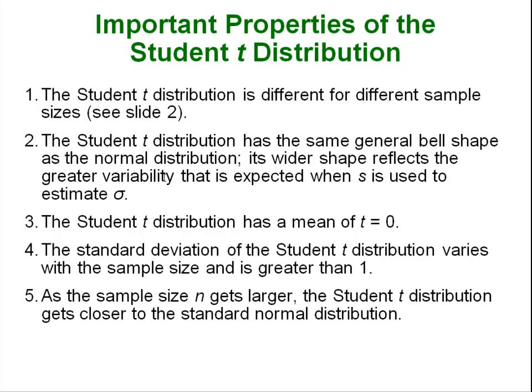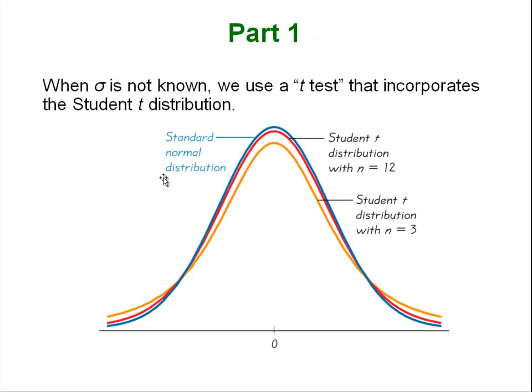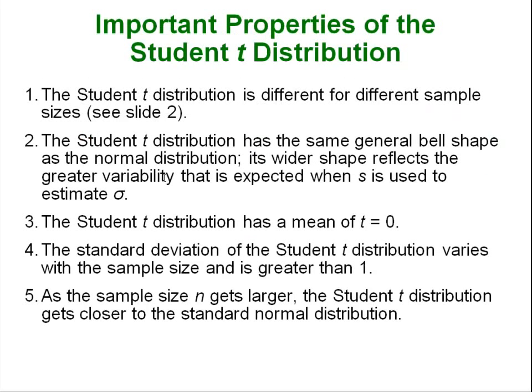Just to remind us some of the important properties of the t distribution: its shape changes every time the sample size goes up as we saw in this slide. Additionally the t distribution is very similar to the normal distribution in that it has that general bell shape. It is wider at the sides which means it has greater variability. The t distribution still has a mean of zero and instead of having the standard deviation of one like the standard normal curve its standard deviation varies with the sample size. So it starts off bigger than one and it shrinks down as your sample size gets larger.